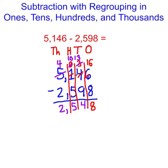So, I can say that 5,146 minus 2,598 is equal to 2,548.